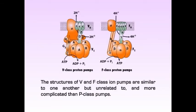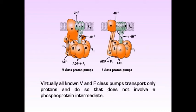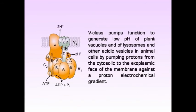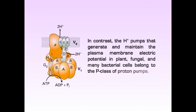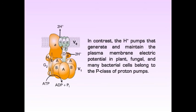The structures of V and F class ion pumps are similar to one another but unrelated to and more complicated than P class pumps. Virtually all known V and F class pumps transport only protons and do so without involving a phosphoprotein intermediate. V class pumps function to generate the low pH of plant vacuoles and of lysosomes and other acidic vesicles in animal cells by pumping protons from the cytosolic to the exoplasmic phase of the membrane against a proton electrochemical gradient. In contrast, the hydrogen pumps that generate and maintain the plasma membrane electric potential in plant, fungal, and many bacterial cells belong to the P class of proton pumps.